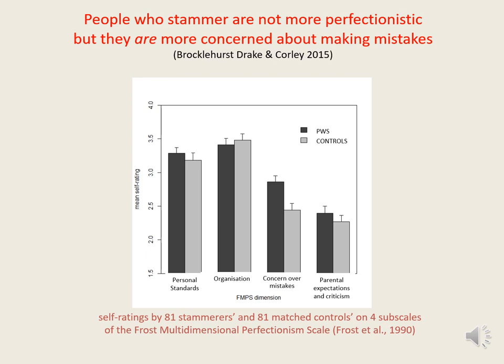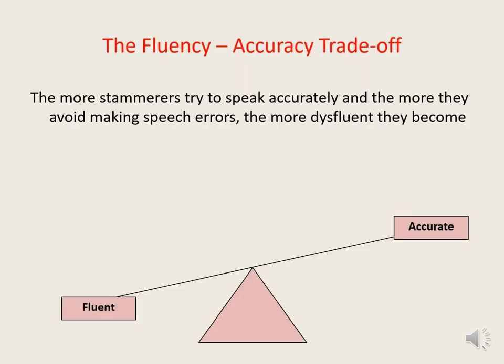It is however important to bear in mind that the 35 FMPS statements refer to all aspects of people's behaviour, not just to their speech and language skills. So further research is needed to clarify whether stammerers' raised levels of concern about making mistakes is a general behavioural trait or whether it's specifically related to their speech and language skills. If we consider together the findings that stammerers not only make more speech errors than normally fluent speakers but are also more concerned about making such errors, it wouldn't be at all surprising to find that when they speak, they tend to monitor their speech more vigilantly and put more effort into avoiding and correcting whatever errors they detect or anticipate.